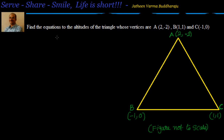In this session let's look at how to find out the equation of the altitudes of a triangle whose vertices are given. We also know that the point of intersection or point of concurrency of the altitudes is known as the orthocenter. Once we get the equations of the altitudes, we can solve them by elimination or substitution method to find out the orthocenter.